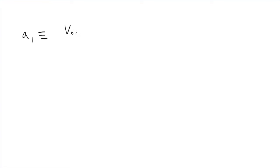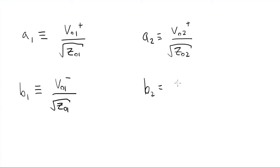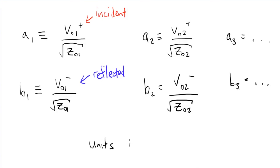And now for some definitions. Our incoming and outcoming amplitudes are represented by voltages over the square root of the characteristic impedance of each port. The plus indicates incident and the minus indicates reflected. The units are volts over square root of ohms.